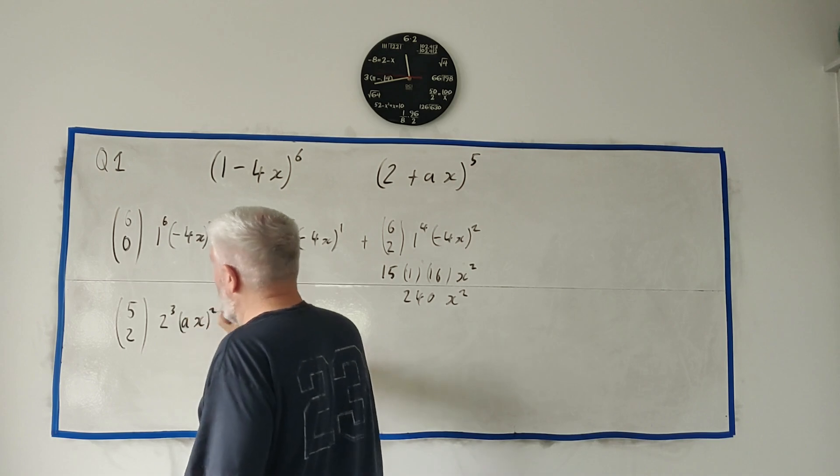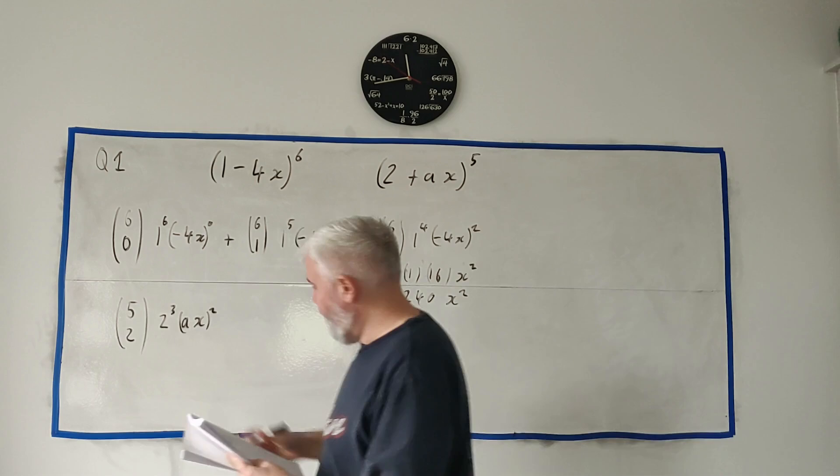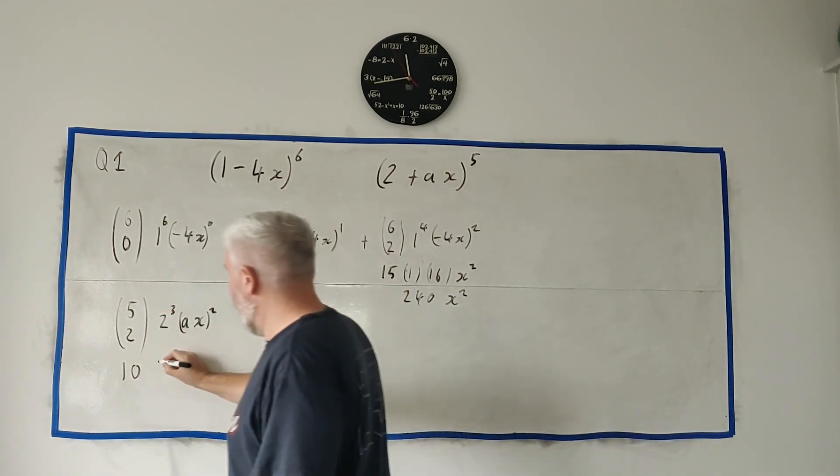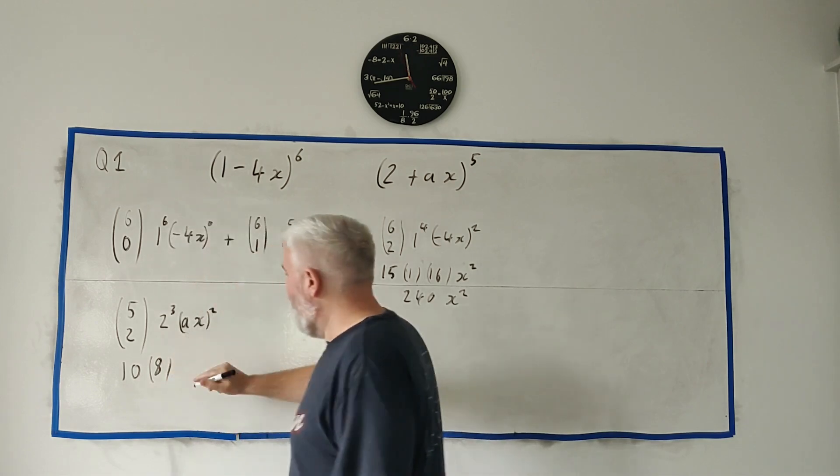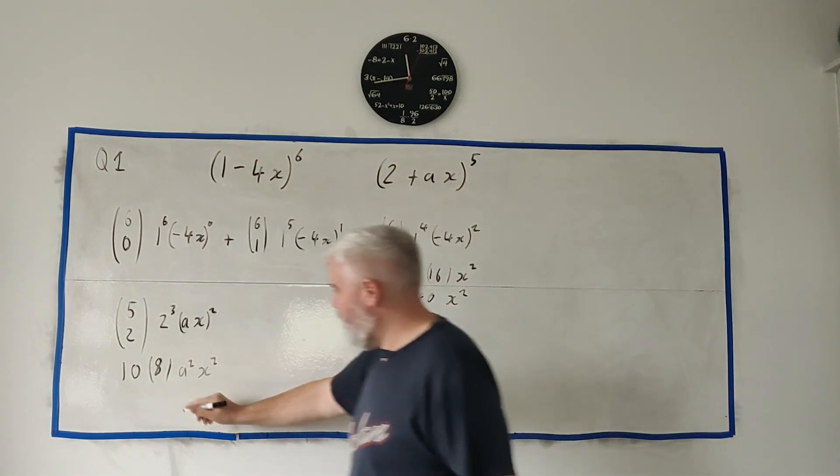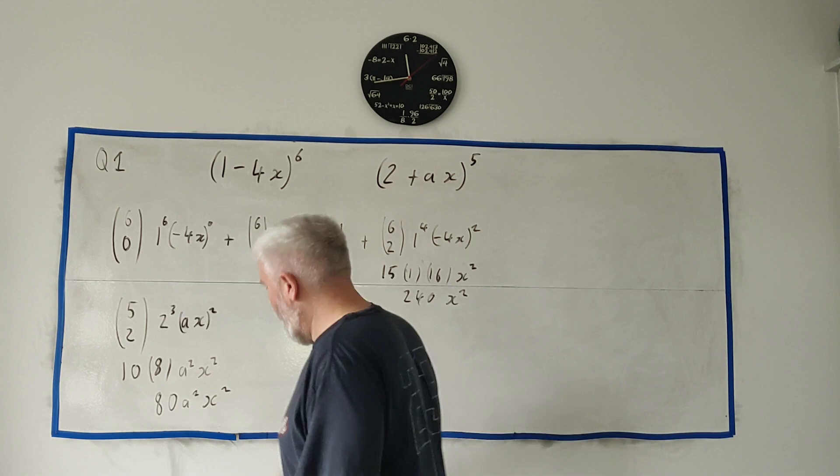And the term we're interested in, ax squared. And so we can do that all in one go as well, that's 5 choose 2 is 10, 2 to the power of 3 is 8, a squared is a squared, x squared is x squared. And oh yeah, clean that up, that's 80a²x².